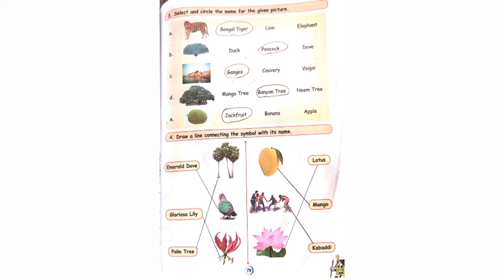Select and circle the name for the given picture. First one is Bengal Tiger. The picture is given on the side. You have to circle the correct name: Bengal Tiger. Second one: Peacock. Third one: Ganges. D: it is a banyan tree, circle it. Next one: jackfruit, circle it.